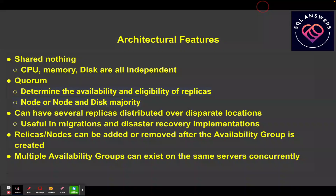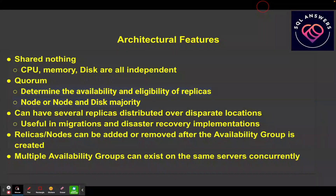Replicas and nodes can be added or removed from your availability group after it's created, which is very useful if you decide you no longer need as many replicas or you'd like to add one. You can also have multiple availability groups on the same servers concurrently. An availability group is essentially a set of databases you'd like to work as a cohesive unit, and maybe not all databases on a server belong in the same group, so you can group them independently.